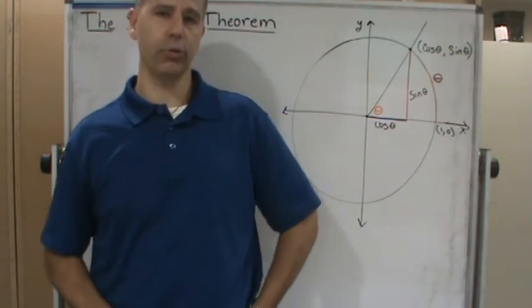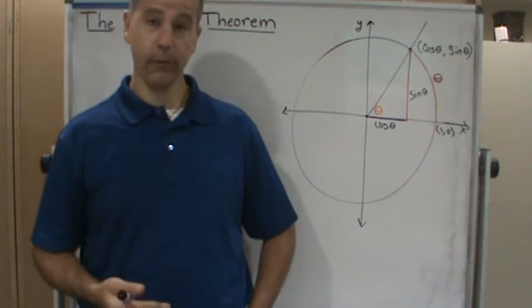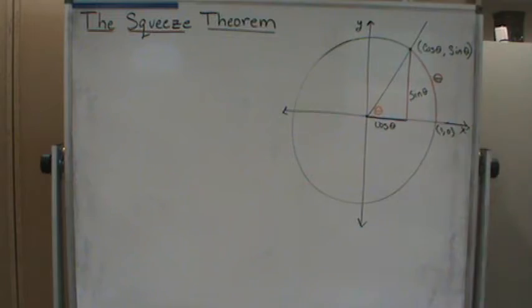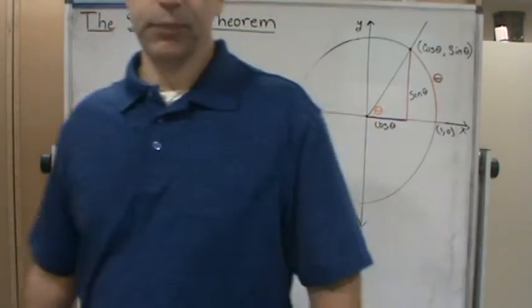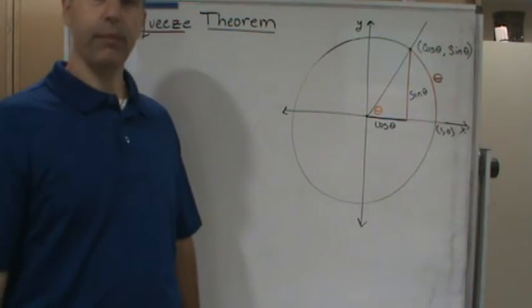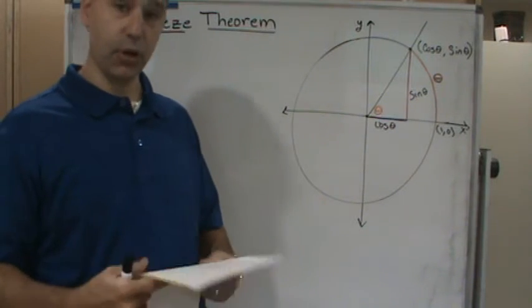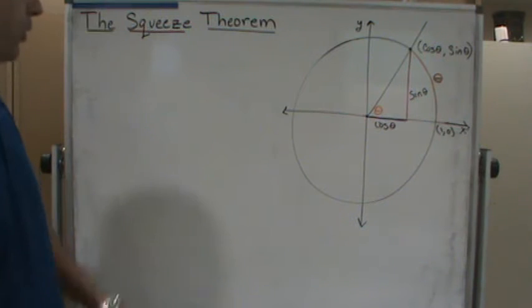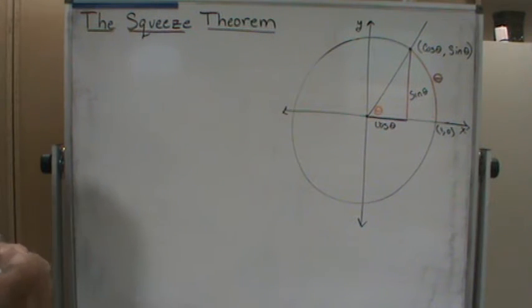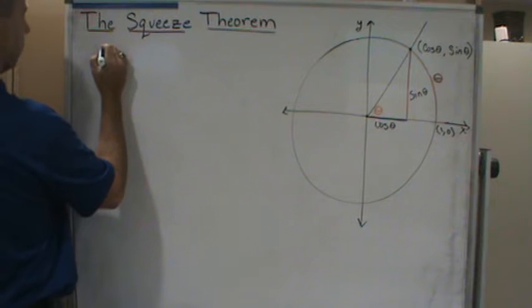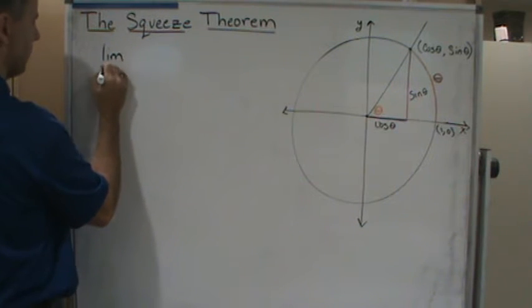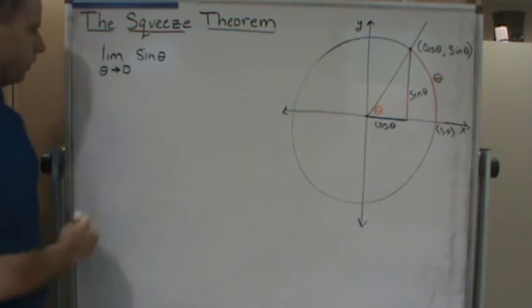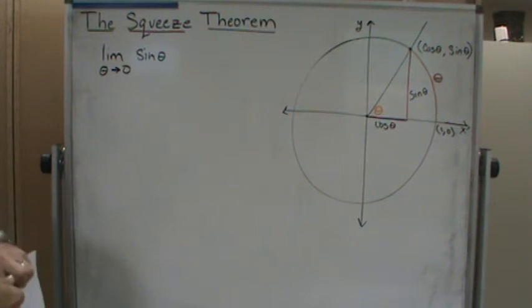Welcome back. What we're going to do is develop some important facts that you'll need going forward — used in the following videos for this section and also for the following chapter. We're going to start with the unit circle and look at the limit as theta approaches zero of sine theta.